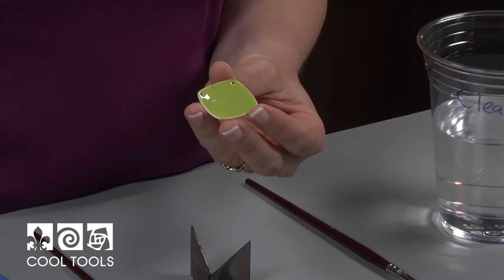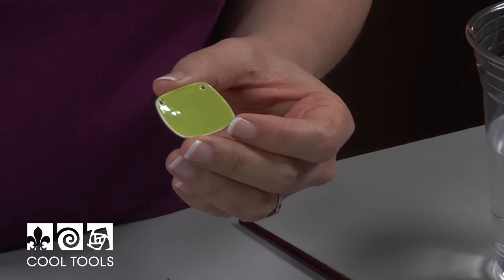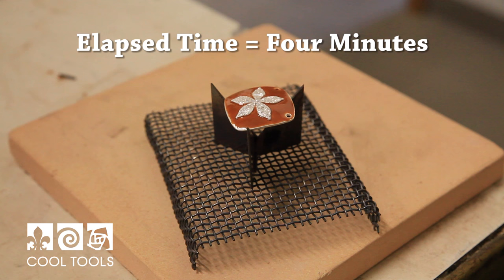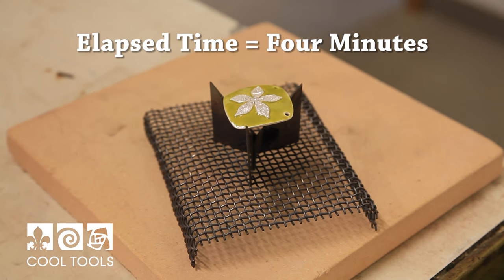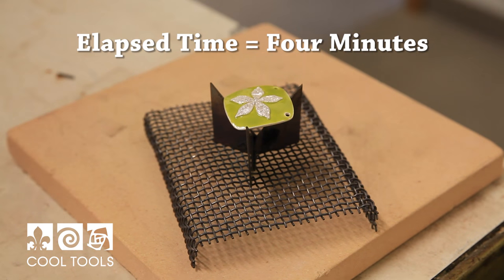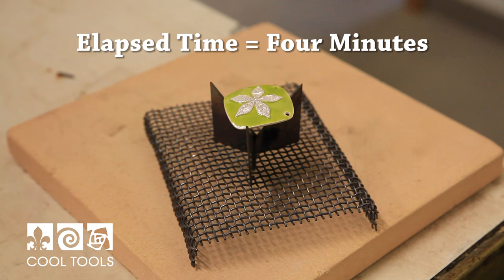I've got the counter enamel fired on. When you first pull this out of the kiln, it's going to turn a very ugly, muddy brown. Don't panic. Perfectly normal. It doesn't brighten up to its true color until it's completely cooled off. So just go with it. You'll be fine. And now we're ready to do the front side.